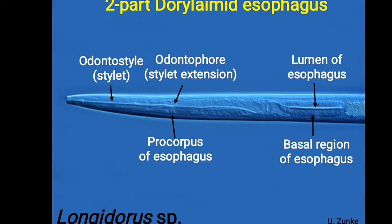The lumen of the stylet is less than one micron in diameter. Plant-parasitic nematodes have a hollow buccal spear or stylet — they act as a bacterial filter in some cases, like a micro-hypodermic needle. The material is injected into the plant cell, and nutrients are ingested from the plant. This is the function of the stylet.